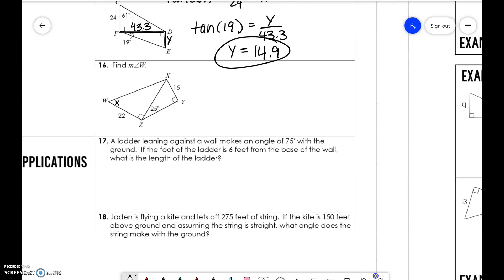If we're trying to find the measure of angle W here, we need to know what this side is because that's obviously the one that they share. So let's rename these as A and B because we already have X in this problem. So we have opposite and hypotenuse. So sine of 25 is equal to 15 over B. B is equal to 35.5. Then we have opposite and adjacent. So that's tangent of A is equal to 35.5 over 22. So A is equal to 58.2 degrees.